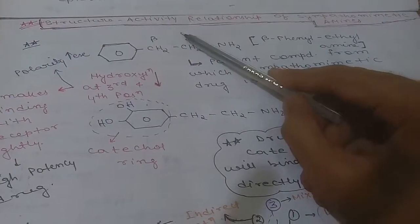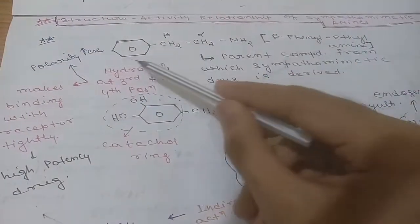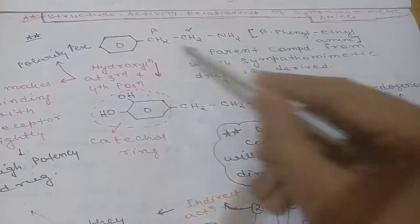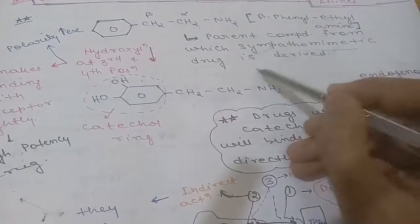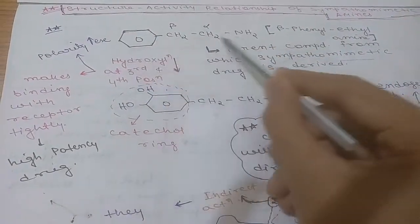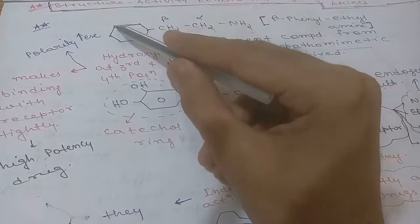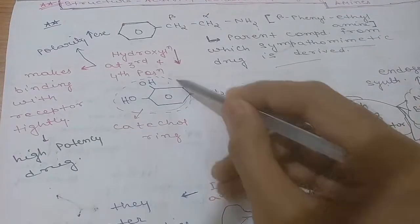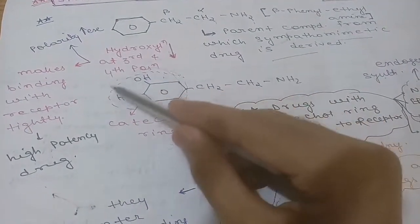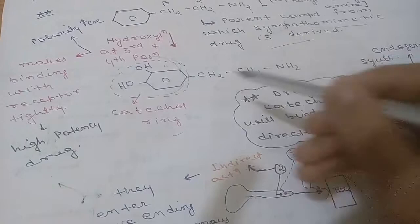We will move into the next part: Structure-Activity Relationship of sympathomimetic amines. The parent compound is beta-phenylethylamine, from which sympathomimetic drugs are derived. If there is hydroxylation at the third and fourth positions, this particular group is formed and is known as the catechol ring. Any compound having this catechol ring is known as a catecholamine.